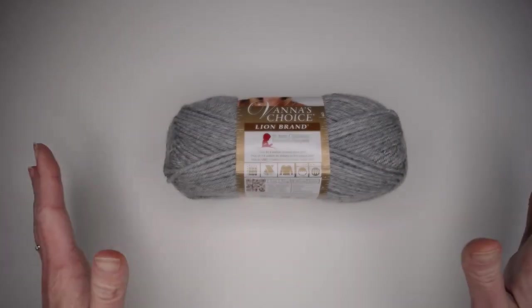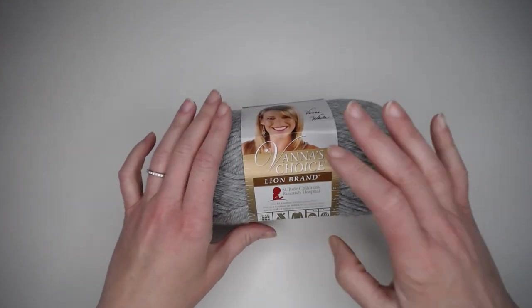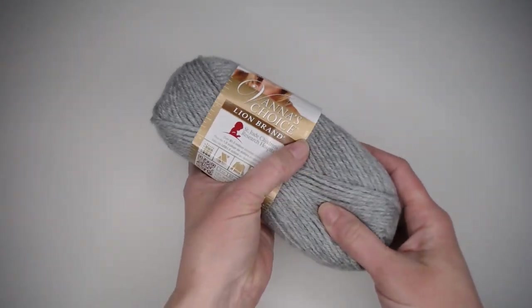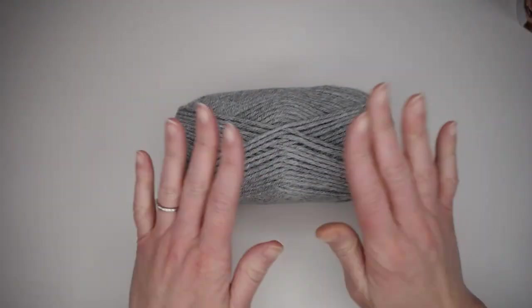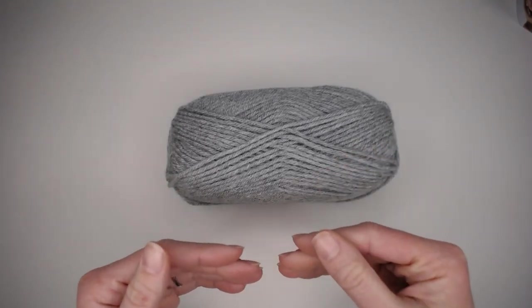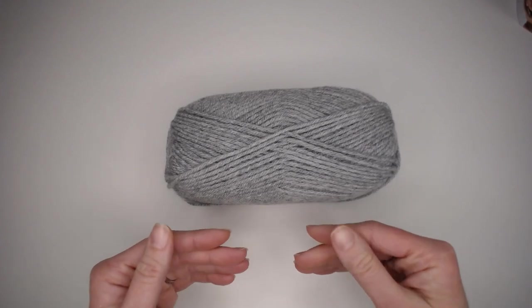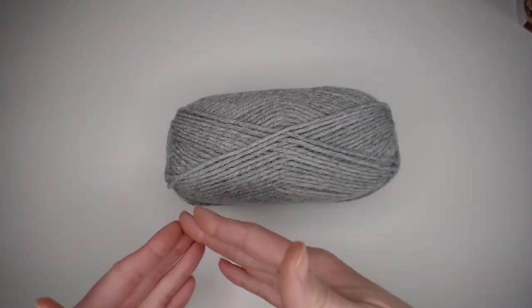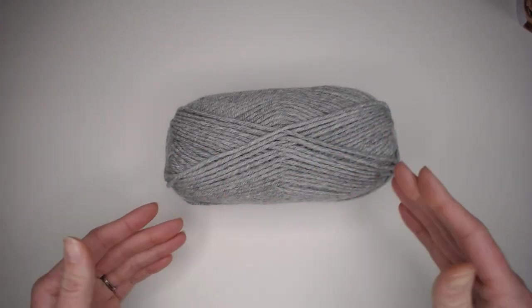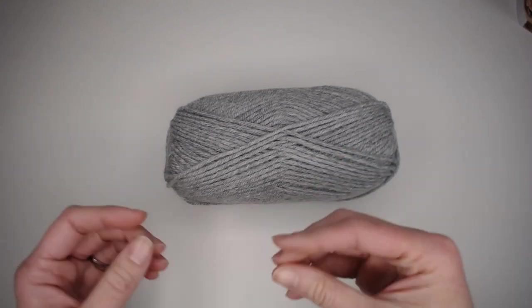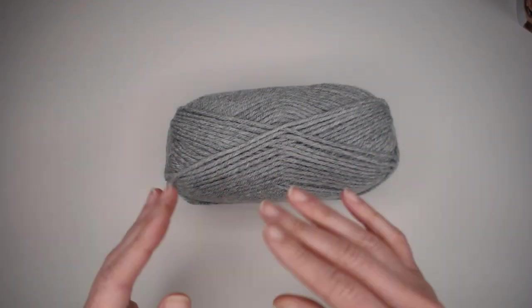Before you even start crocheting, I highly recommend you taking your ball of yarn, your skein of yarn, and rolling it into a ball. By rolling it into a ball, you can avoid things such as the knots inside of a skein of yarn or any tangles that might be happening because it is very frustrating working on a project and having to pause and stop to unravel a knot.